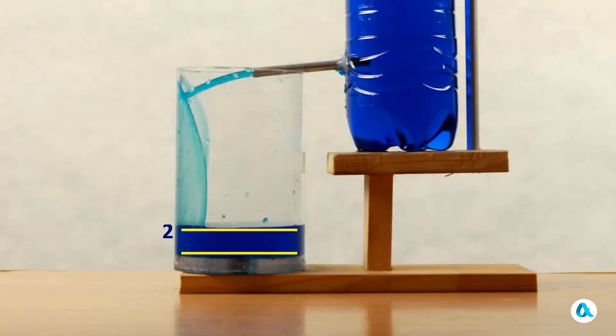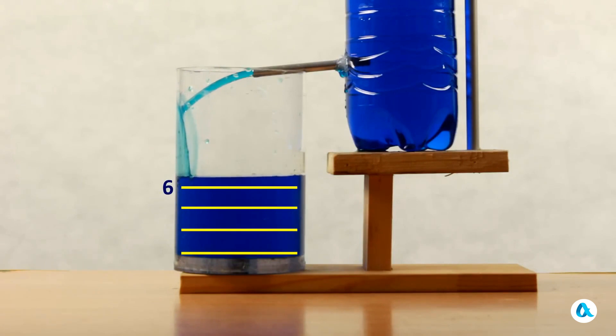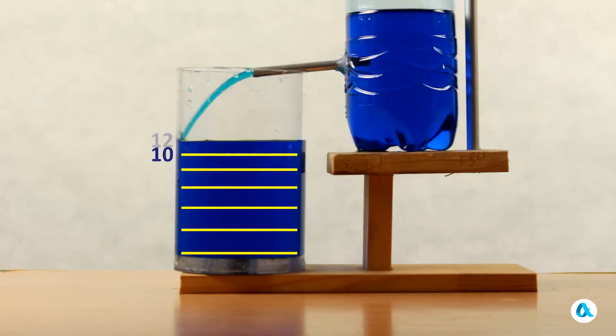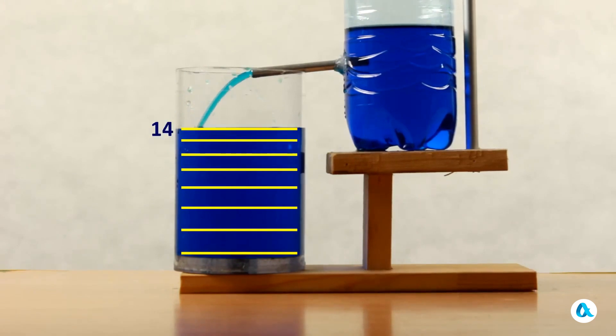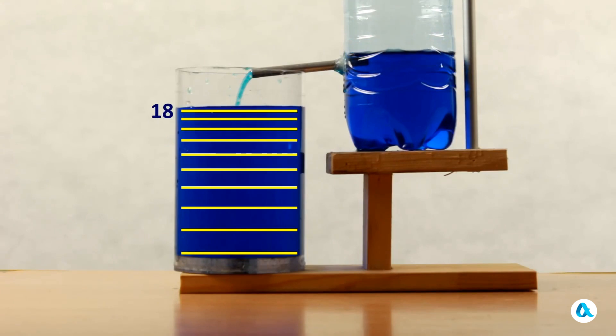And we will mark the water levels in the lower vessel at equal time intervals. Initially the water flows quickly but then its flow gradually slows down. This is also evident because the stream from the tube becomes weaker and weaker and towards the end the water barely flows. The marked levels show how this slowing down occurred.